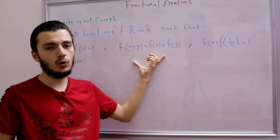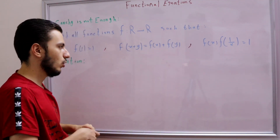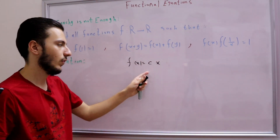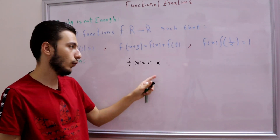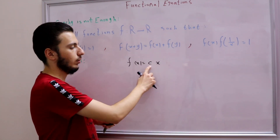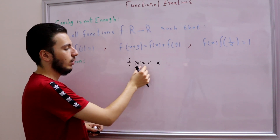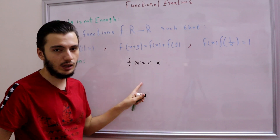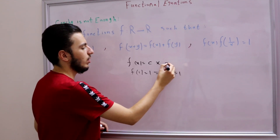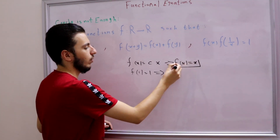We know this is Cauchy's functional equation, which has a solution of the form f(x) = cx. To determine c, we use f(1) = 1: substituting x = 1 gives f(1) = c = 1, so c = 1. Therefore f(x) = x.